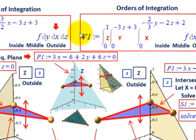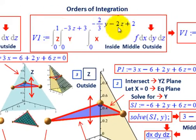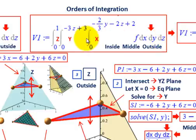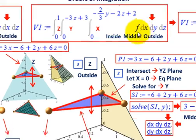Now let's look at the other case. We're going to switch DY and DX around, so we're going to look at DX, DY, DZ. DX becomes our inside integral, DY is our middle one, and DZ is our outside one.